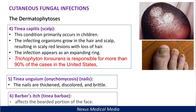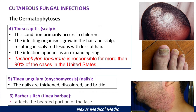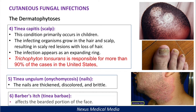Tinea barbae, or barber's itch, affects the bearded portion of the face. To recap: tinea corporis forms the ringworm on the body; tinea pedis is athlete's foot; tinea capitis affects the scalp, as seen in children; tinea unguium affects the nails; and tinea barbae affects the bearded portion of the face.